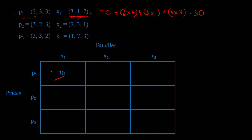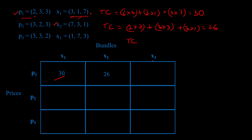Similarly, we can calculate the cost for bundle X2 at price P1: multiply P1 by X2, which gives 2×7 + 3×3 + 3×1 = 14 + 9 + 3 = 26. And for bundle X3 at price P1: 2×1 + 3×7 + 3×3 = 2 + 21 + 9 = 32. I've already filled up the rest of the table for you.